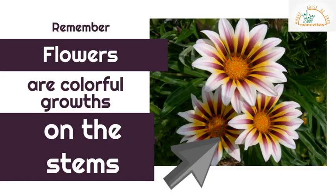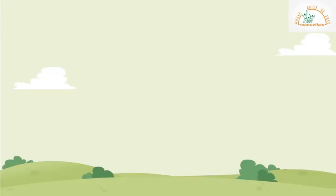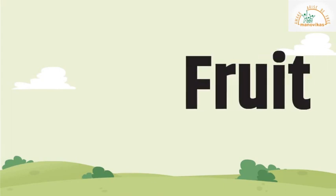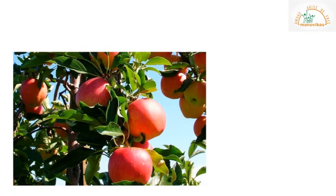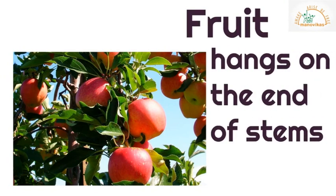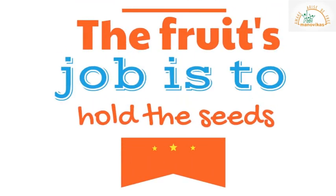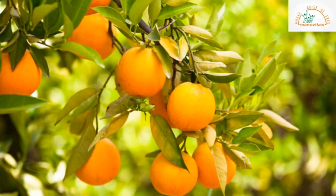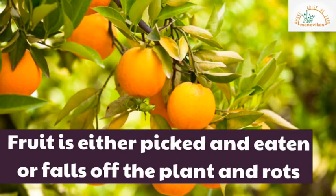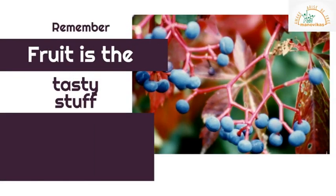The next part of the plant we are going to learn about is the fruit. Fruit hangs on the end of the stems. The fruit's job is to hold the seeds — the fruit is just the delicious seed holder. Either one of two things happens: fruit is picked and eaten, or it falls off the plant and rots.